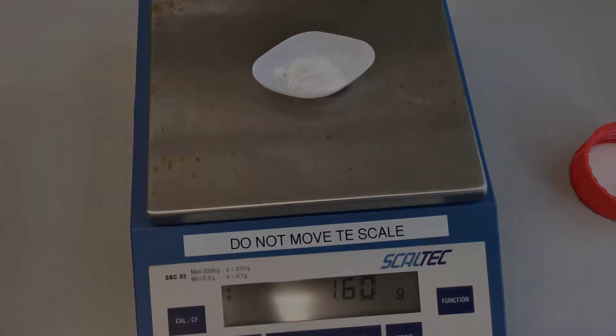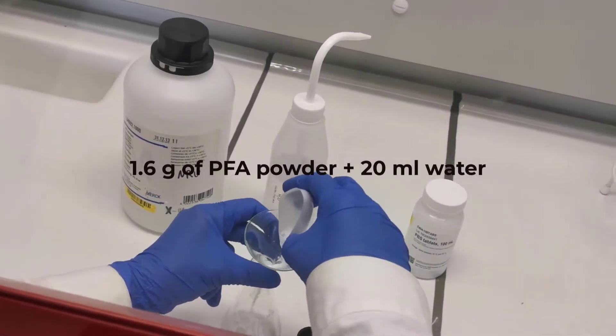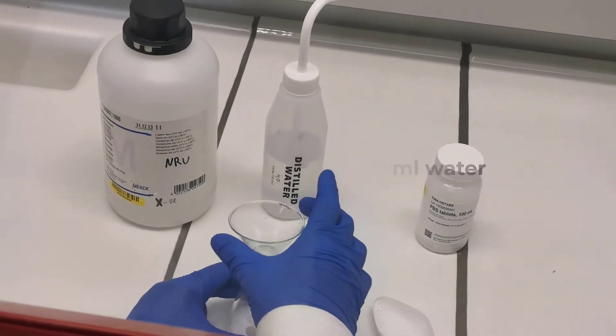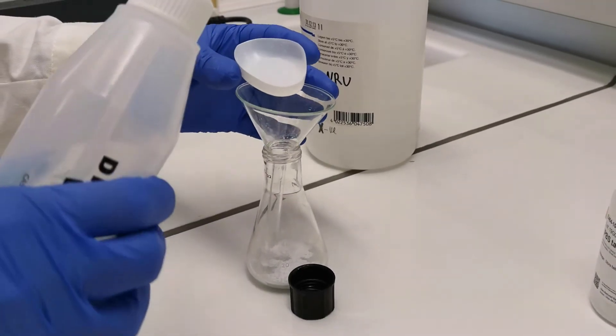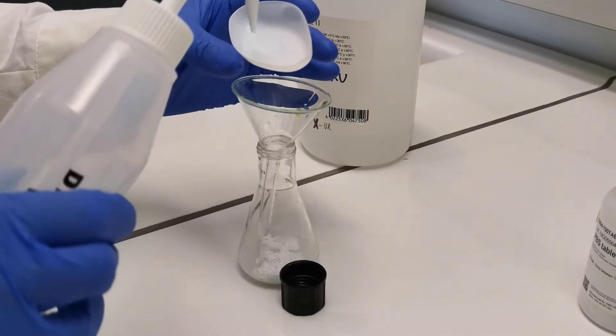For this demonstration, we are making 40 ml of 4% formaldehyde, for which we require 1.6 grams of PFA powder. First, we will dissolve it in 20 ml of double-distilled water in a flask, and then we will make it up with another 20 ml of phosphate-buffered saline at the end.